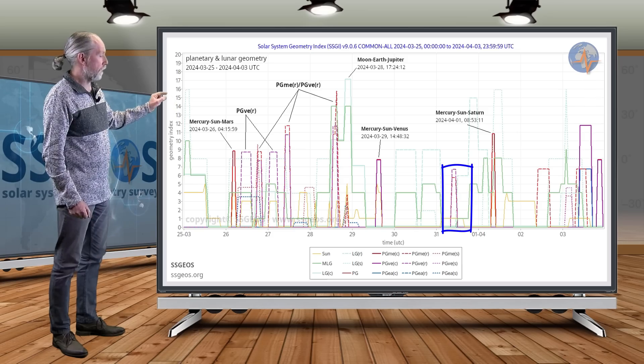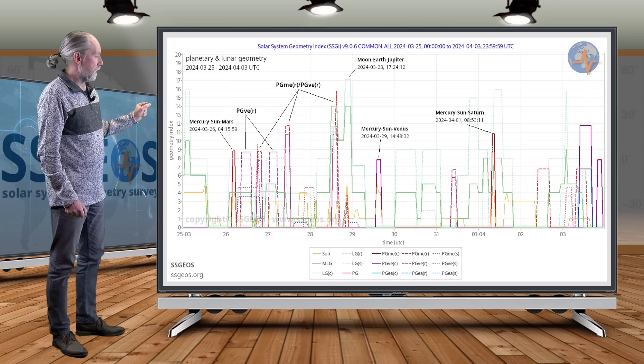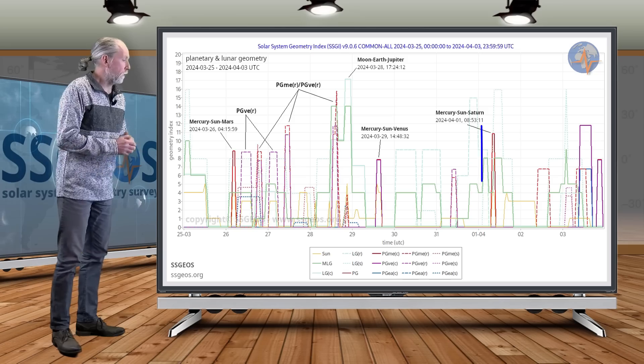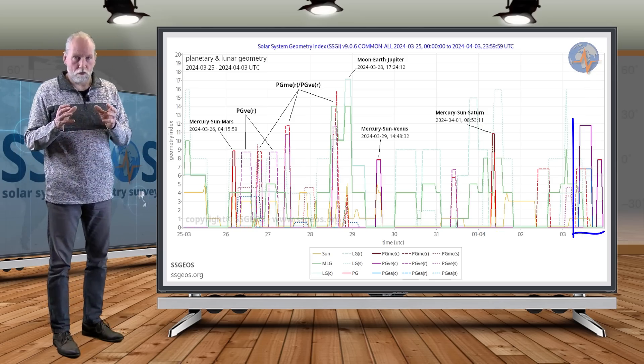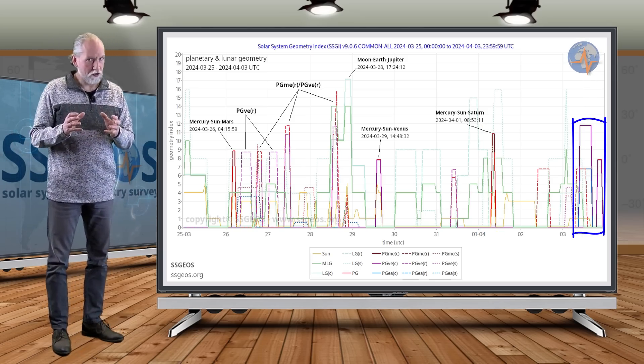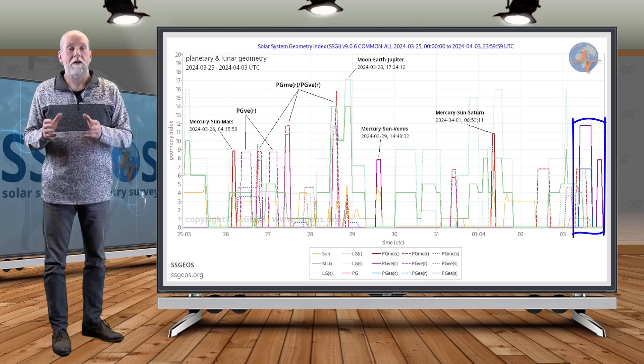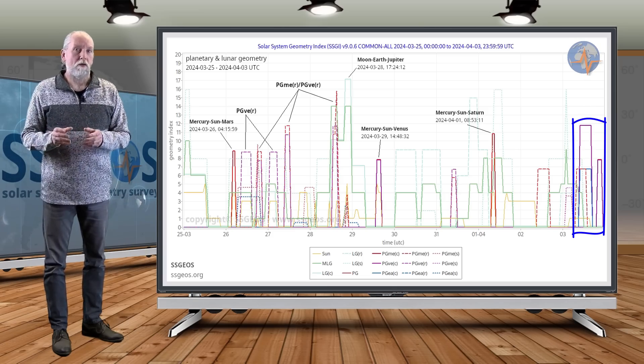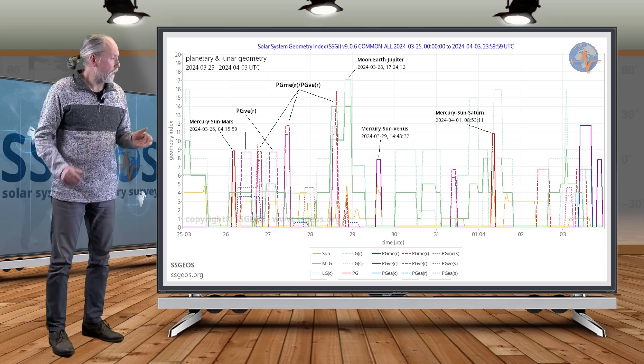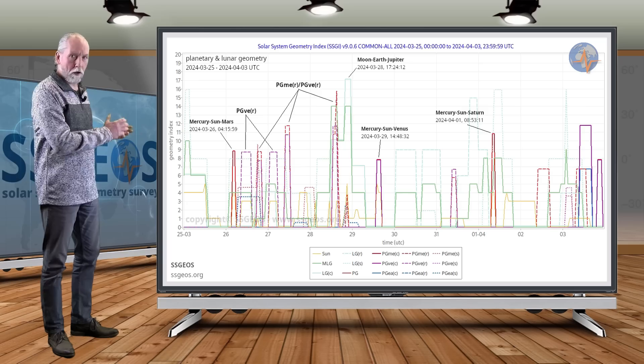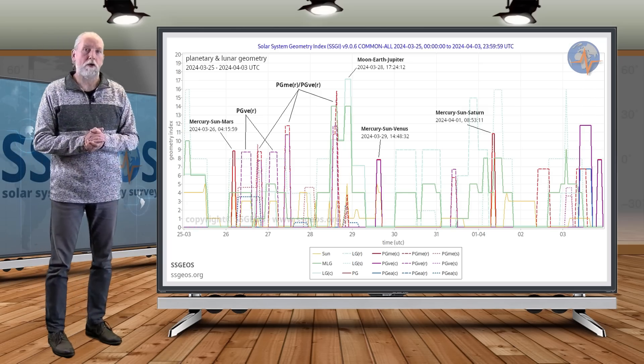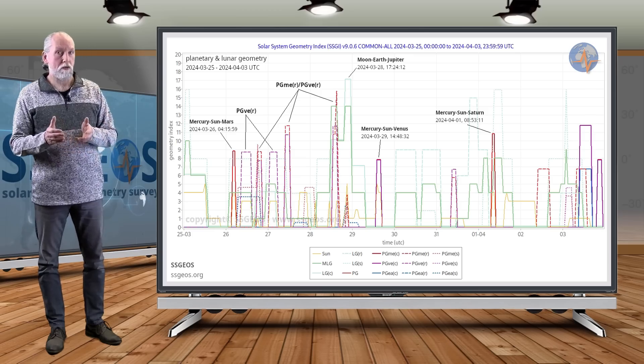If you look further, we see on the 31st also some right-angle geometry, but less critical. And then on the 1st of April, Mercury-Sun-Saturn. And then on the 3rd we see convergence of planetary conjunctions coming up. I will discuss that in the next update, but there may be a synchronicity with the right angles. We're not sure yet, so we have to wait and see what's going to happen following these right angles with Mercury and Venus from the 26th to the 28th.